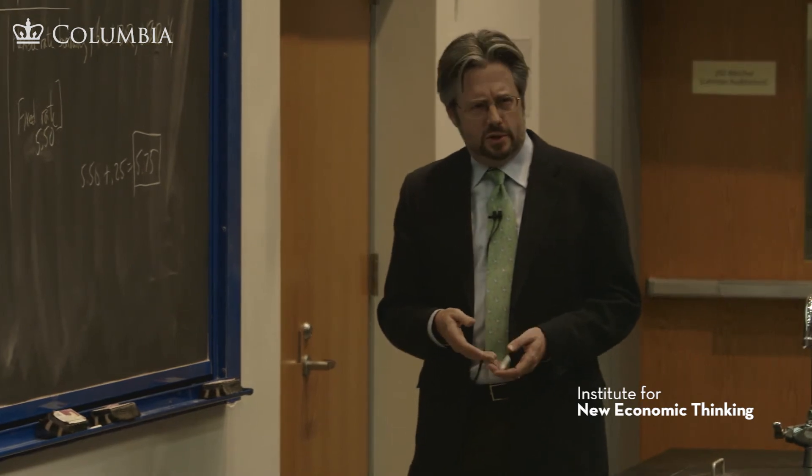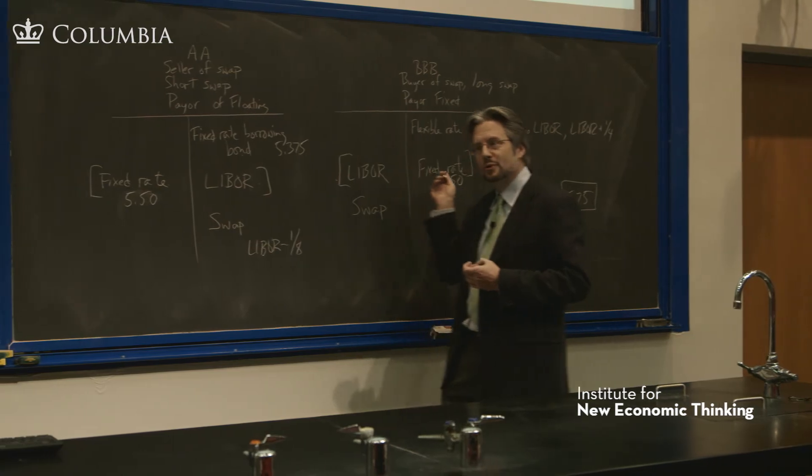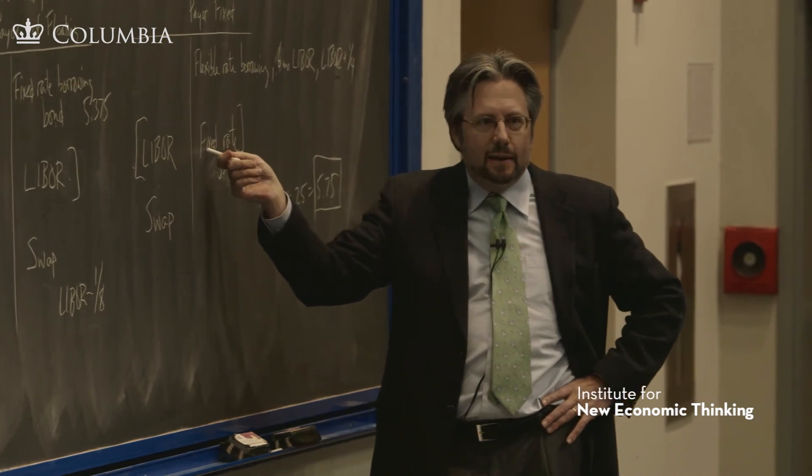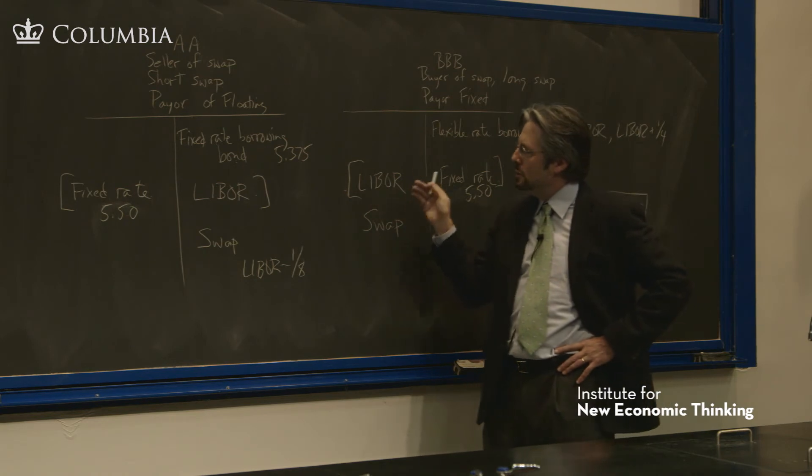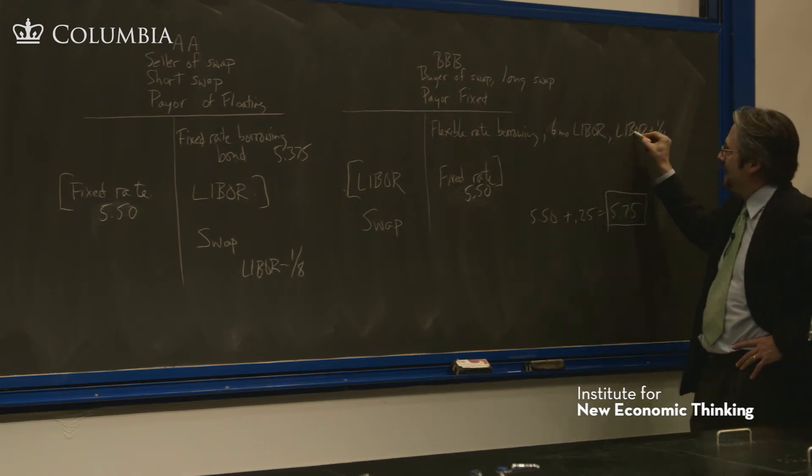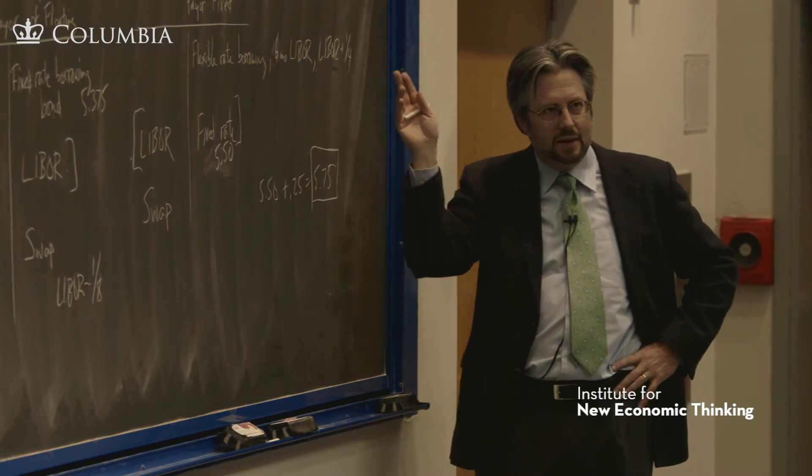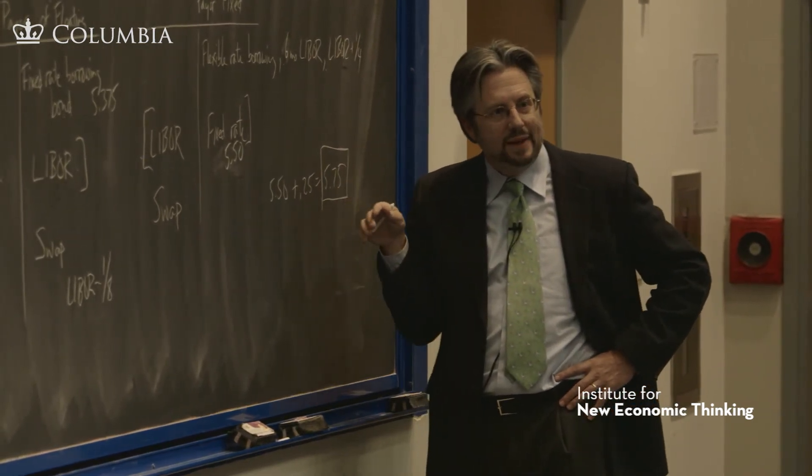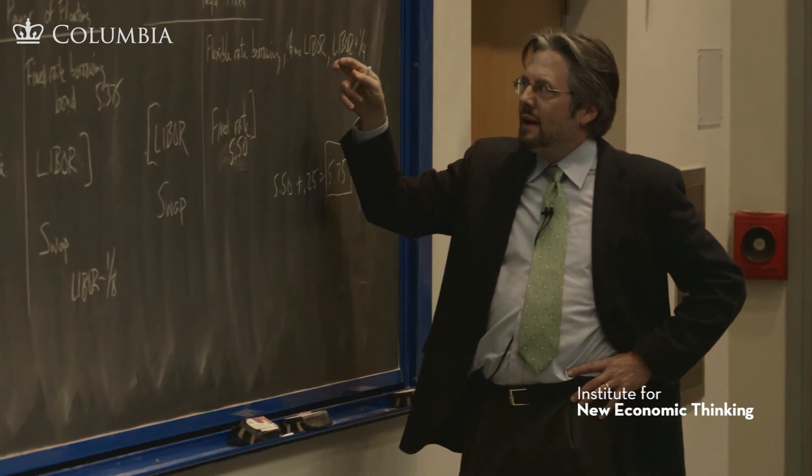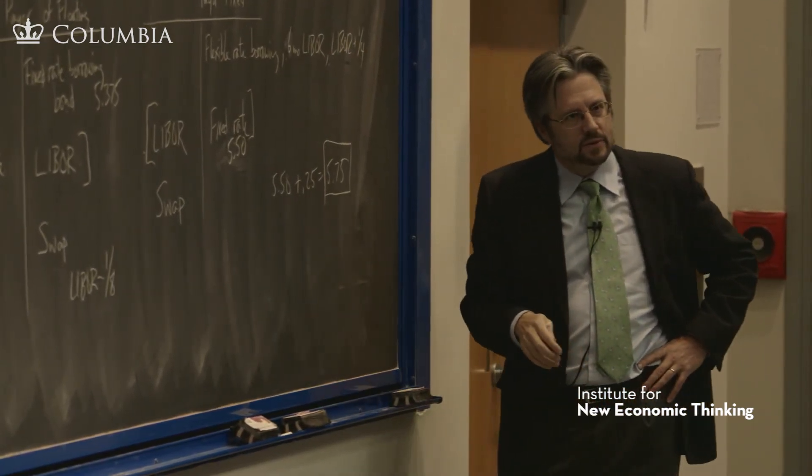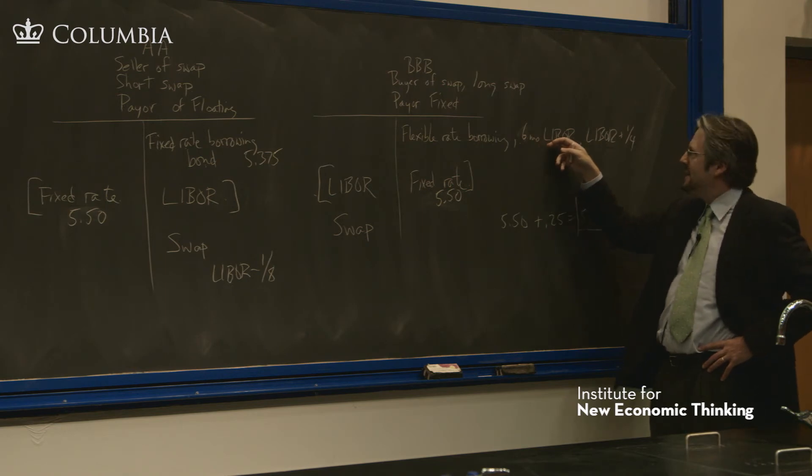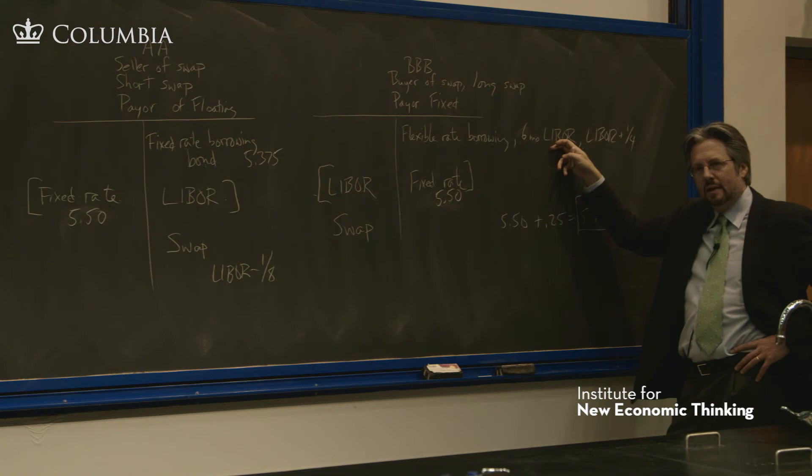And of course, there is exposure. There's exposure to BBB here. BBB has this flexible rate borrowing which they are paying their bank. They haven't gotten rid of that. All they've done is to hedge it. So they now have a swap that is a hedge against movements in LIBOR. It's not a hedge against movements in their credit rating. If six months from now, their banker says I'll roll your six-month funding, but now I want LIBOR plus one, not one quarter, they're not hedged against that.